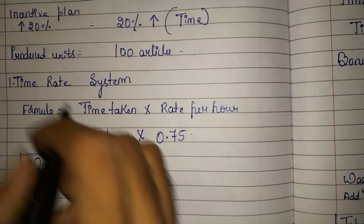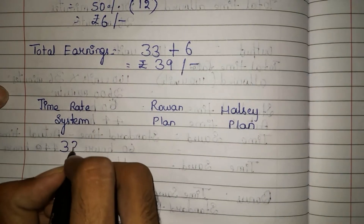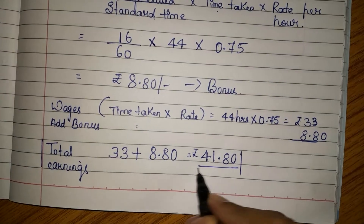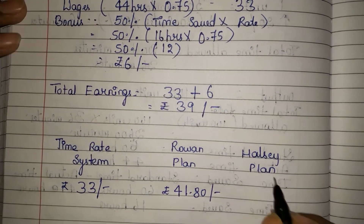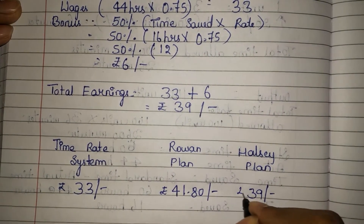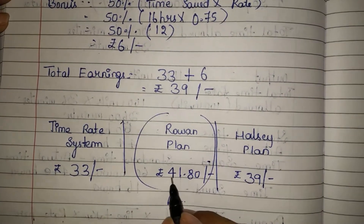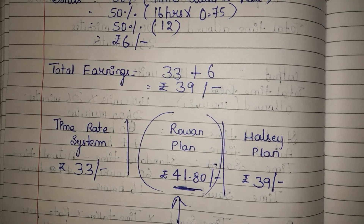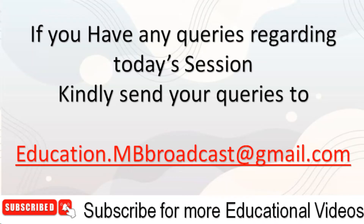Under the time rate system, the worker gets 33 rupees. According to Rowan plan, he should get 41.80 rupees. According to Halsey plan, he should get 39 rupees. If you observe between these three systems, Rowan plan is giving him more wages because it is on an incentive basis. Hope you have understood this problem very well. The notes for this are in the first comment — kindly download the notes and practice well. If you have any queries, send them to education.mbbroadcast@gmail.com.